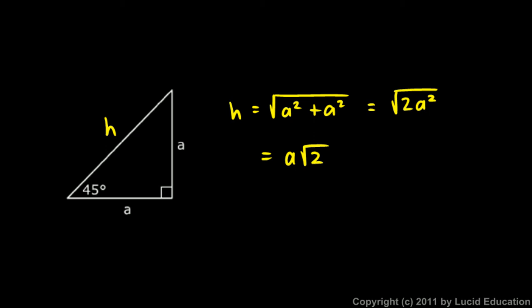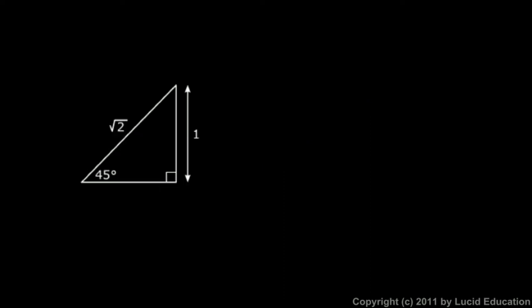And this is true for any 45-45-90 triangle. Regardless of the size, the hypotenuse is equal to the length of one side times the square root of 2. That's always the case for a 45-45-90 triangle. Now knowing that, we can compute the sine ratio for a 45-degree angle. So look at this. Here's a 45-45-90 triangle, and this is a side of length one. It's marked right there, and the hypotenuse is the square root of 2.